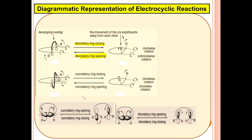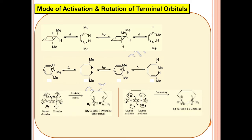In the conrotatory mode, the two lobes are moving in the clockwise direction, giving the open chain analog. In the disrotatory mode, the two lobes go in opposite directions to each other. These are the best possible ways to represent the diagrammatic representation of electrocyclic reactions. The mode of actions — thermal or photochemical — and the rotation of the terminal orbitals are very important under these modes of activation, to get the ring opening or ring closing accomplished.